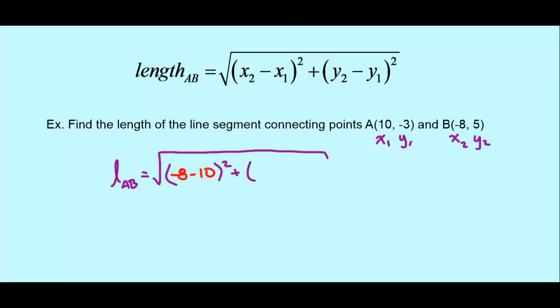Plus y2 minus y1. y2 is 5. And y1 is negative 3. So we're going to be subtracting negative 3. I'm sure to put that in brackets because we're subtracting a negative. We don't want to get confused as to what's going on.